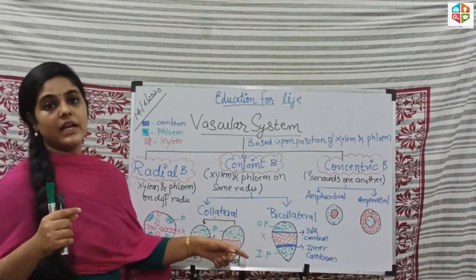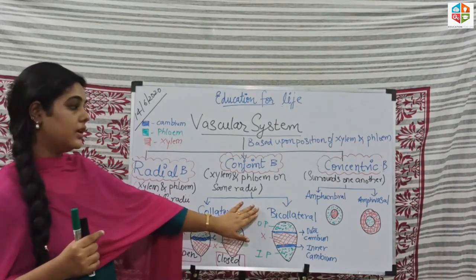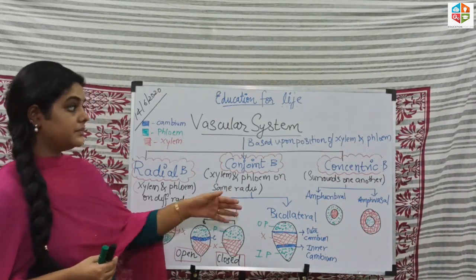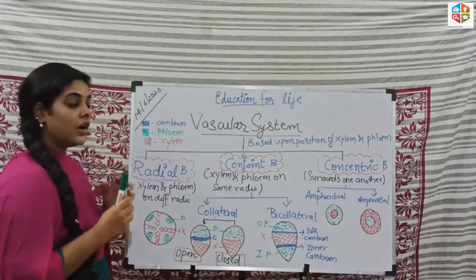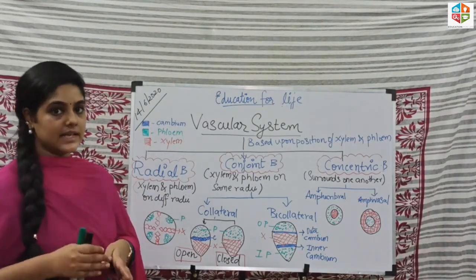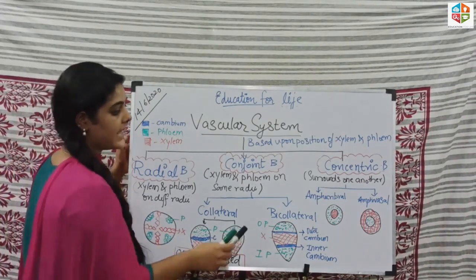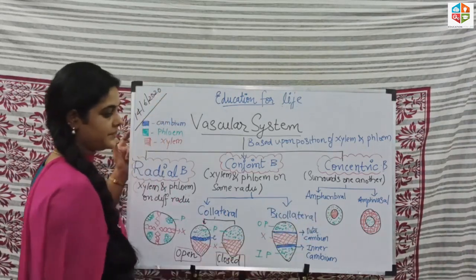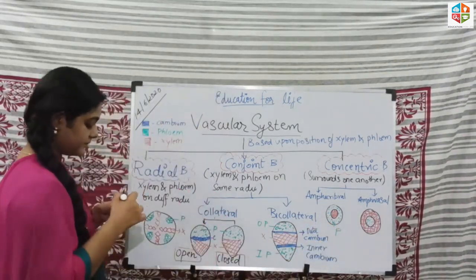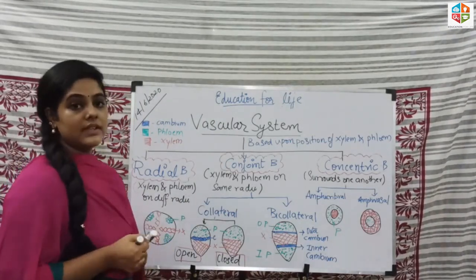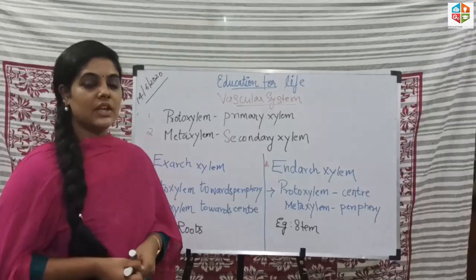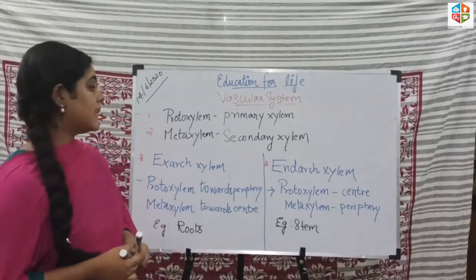In bicollateral conjoint bundles, there is an outer phloem and an inner phloem, with xylem in the middle, flanked by an inner cambium and an outer cambium. An example of bicollateral conjoint bundles is found in the Cucurbitaceae family. The third type is concentric bundles, where either xylem surrounds phloem or phloem surrounds the xylem. Concentric bundles are divided into amphicribral — where xylem is surrounded by phloem — and amphivasal — where phloem is surrounded by xylem.